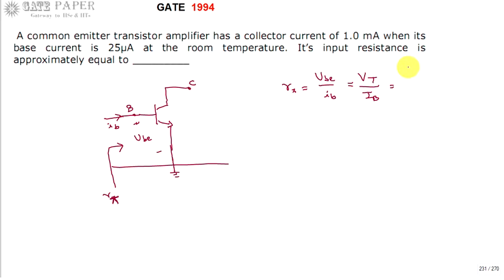Otherwise you can get some other equations as beta by gm. These are all the equations related to input impedance.